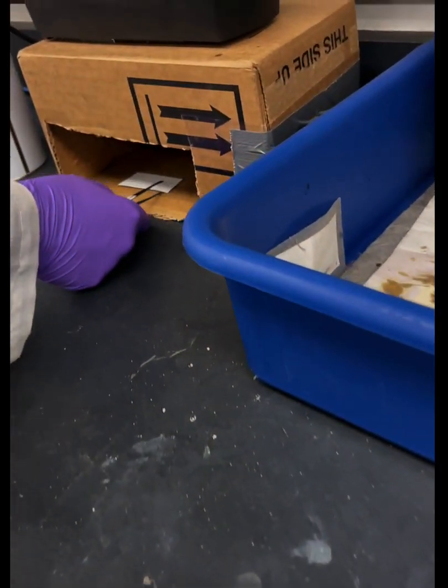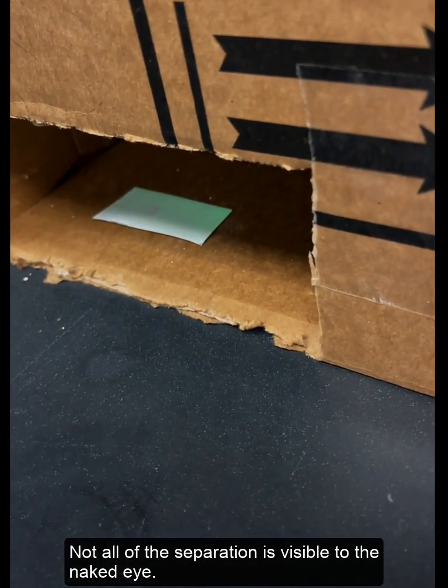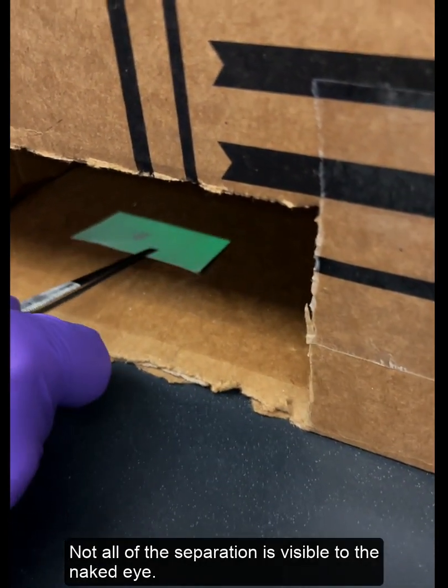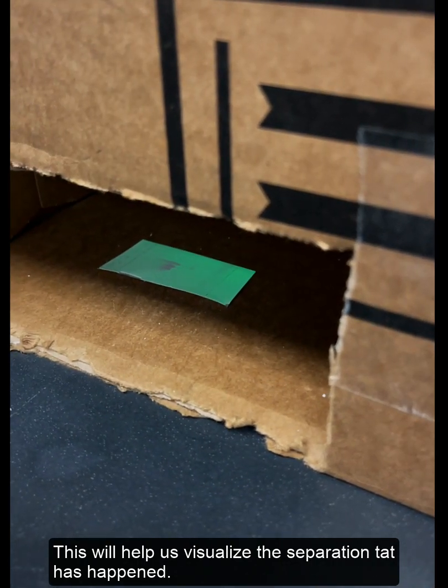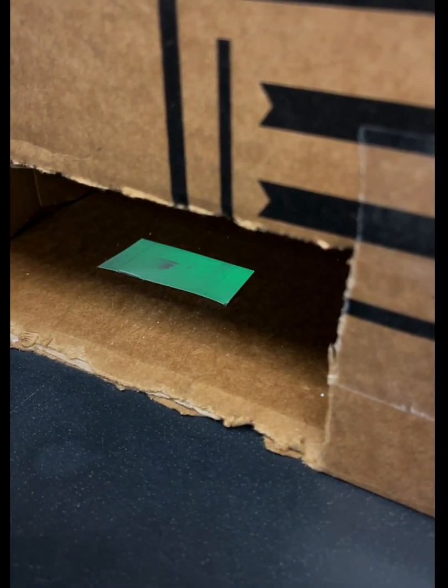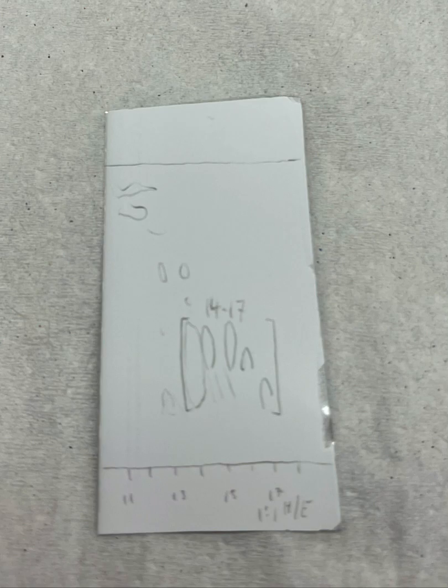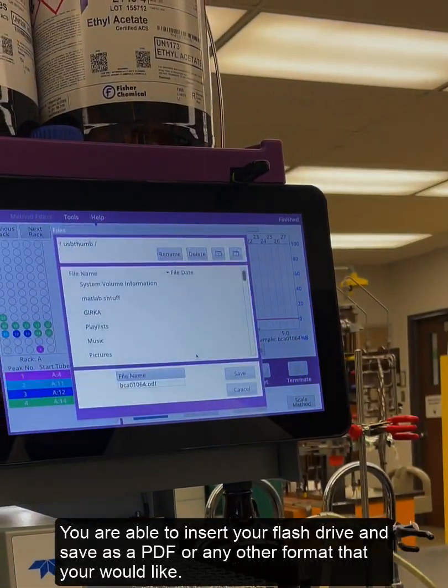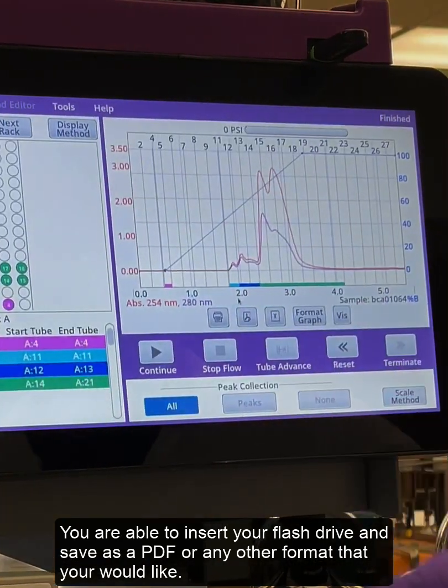We will be testing the TLC strip under UV light because not all of it is visible to the naked eye, and this will just help us visualize the separation that has happened. A marked visual of the separation that has happened. You are able to insert your flash drive and save it as a PDF or any other format that you would like.